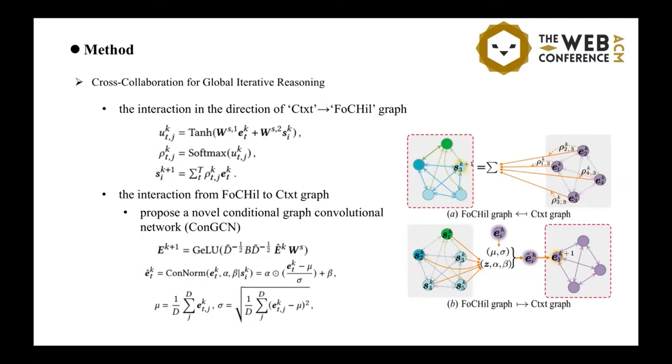In the cross-collaboration mechanism, there are two types of interaction. From the interaction from context to the FoCHiI graph, we utilize a simple attention operation. And, for the interaction from FoCHiI to context graph, we propose a new conditional graph convolution network,